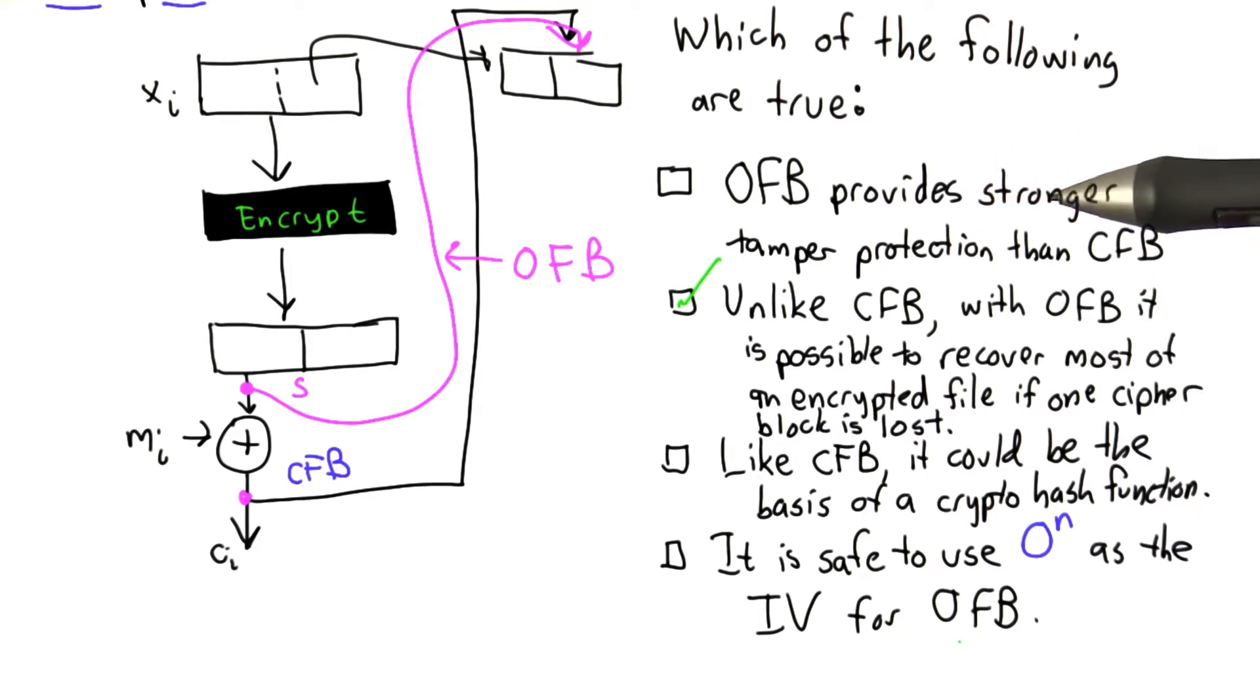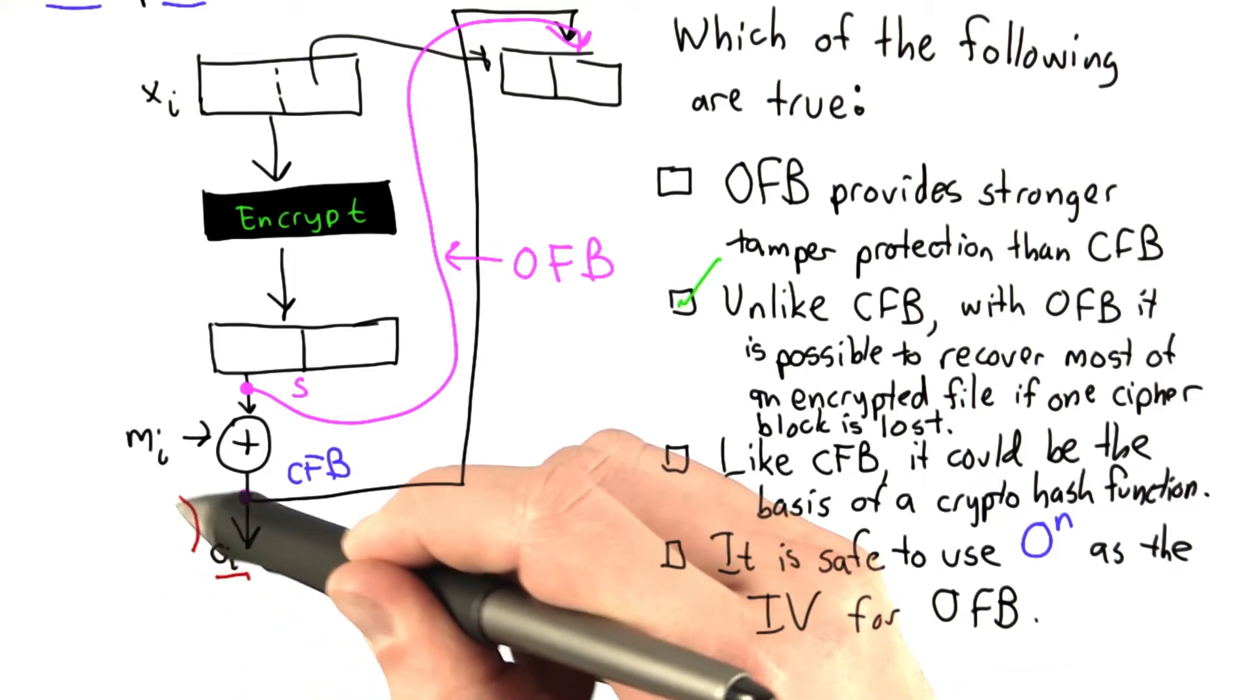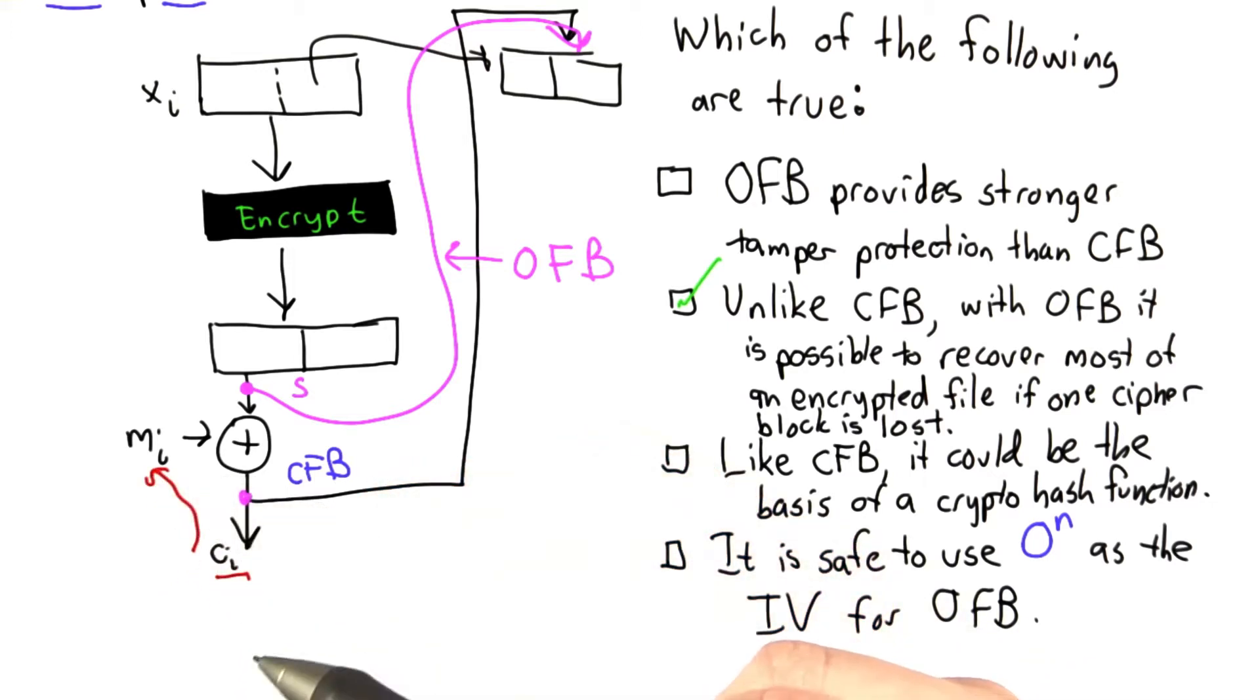OFB doesn't provide any stronger tamper protection than CFB does, and both of them don't provide very much tamper protection at all. To see this, it's quite easy for an attacker to mess with a bit of C1, and that will directly affect bits in the message.